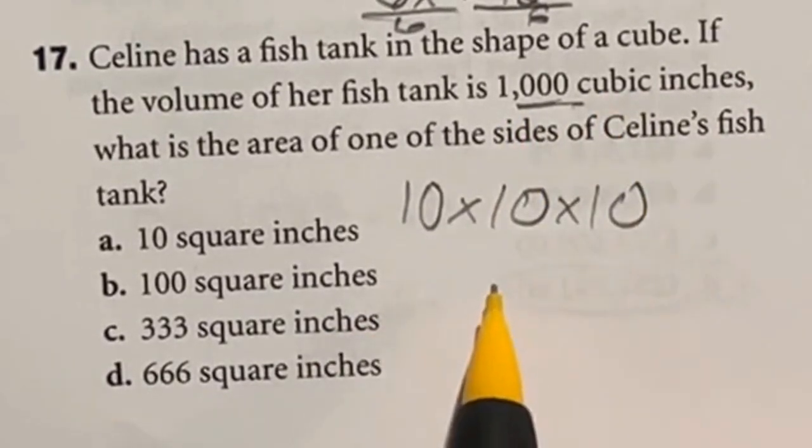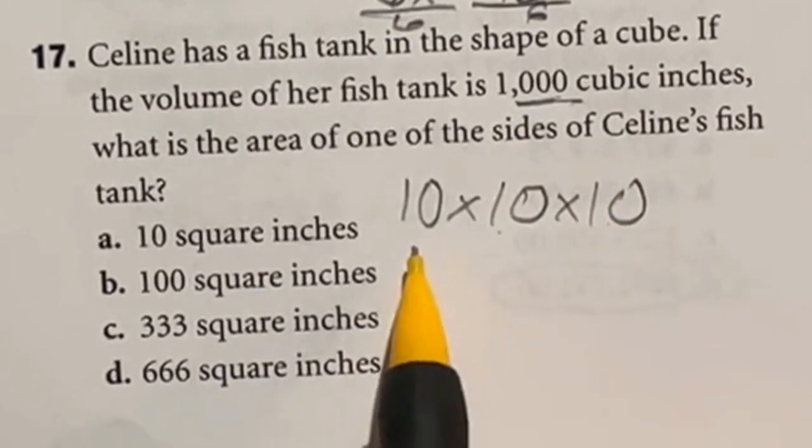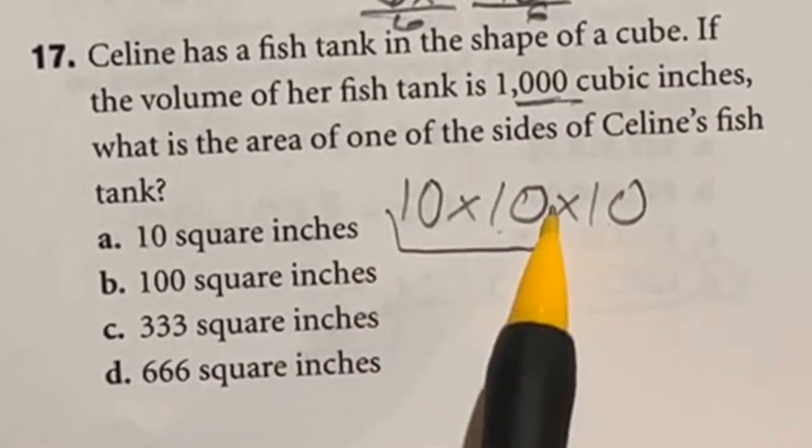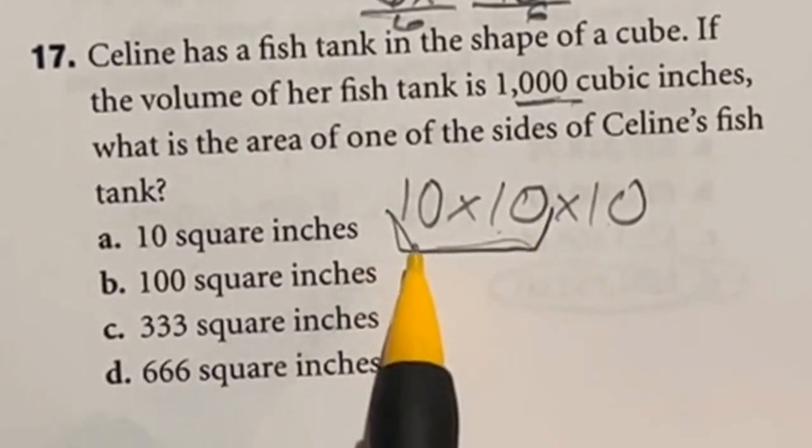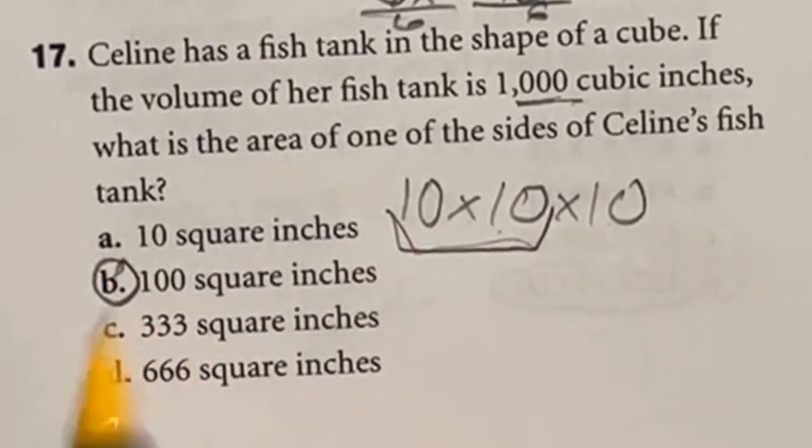So that means that we're looking at a cube that is 10 by 10 by 10. So one square of that would be just a 10 by 10. So the area of a 10 by 10 would be 10 times 10 which is 100. Answer B.